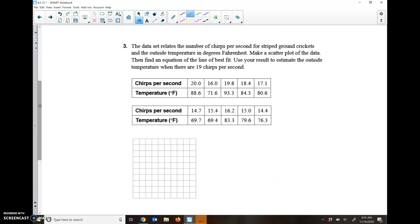Number 3 says the data set relates the number of chirps per second for the striped ground crickets and the outside temperature in degrees Fahrenheit. Make a scatter plot of the data. We're not going to do that. We'll just put it in our calculators, and then find the equation for the line that best fits. Then we need to use your result to estimate the outside temperature when there's 19 chirps per second.